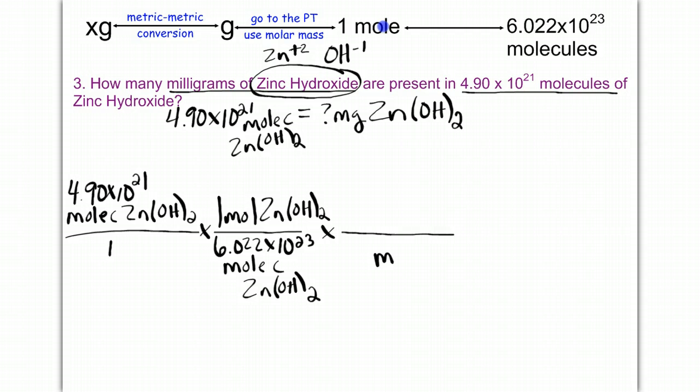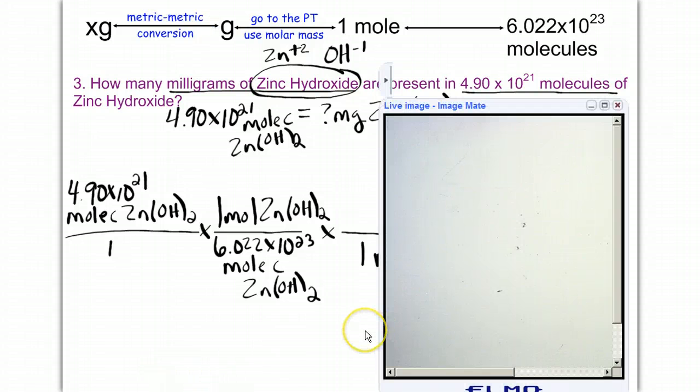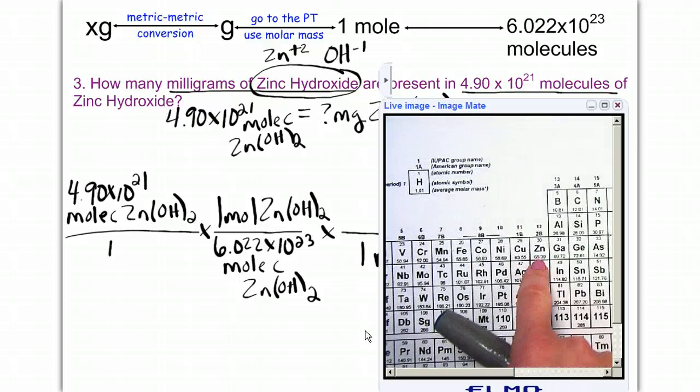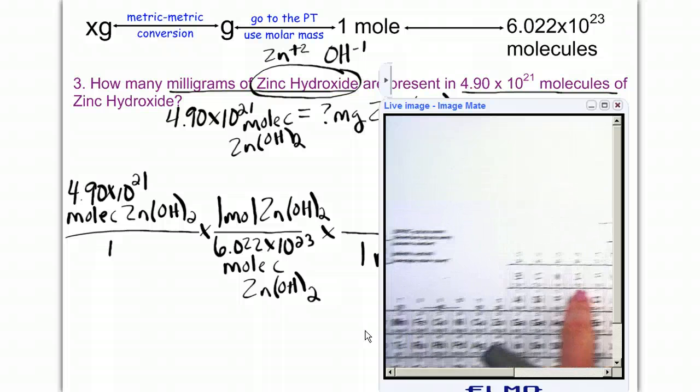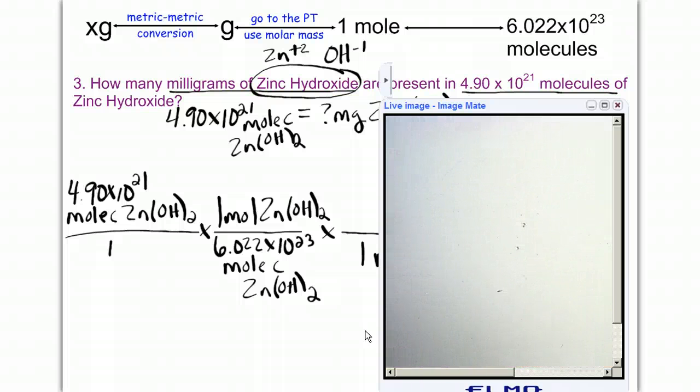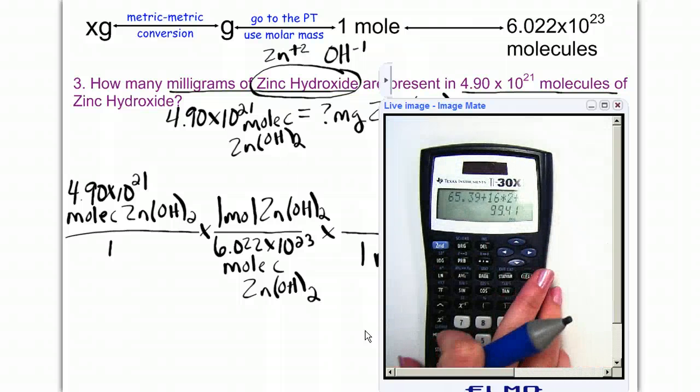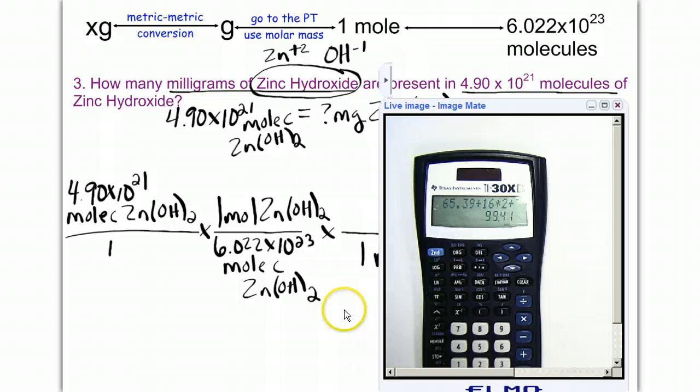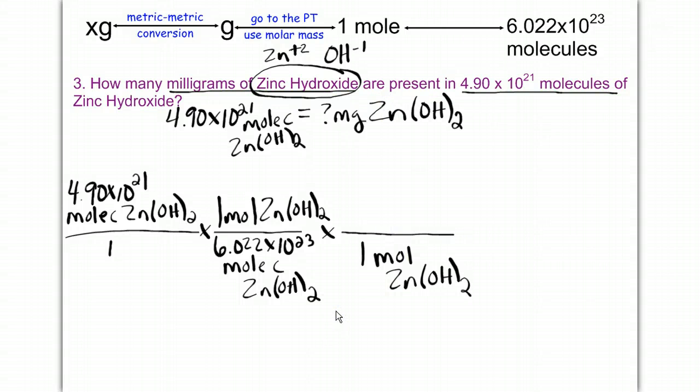Times draw a line. Bring down mole. It's always 1 mole. I'll put my 1 here. And now I'm moving from mole over to grams. And to get grams, I want to go to the periodic table and add up the molar mass. So when I go to the periodic table, I'm going to go find zinc. Here is zinc. And I'm going to add oxygen times 2. I'm going to add hydrogen times 2. And when I get all those added together, I'm going to get a molar mass of 99.41 for zinc hydroxide. So we're going to put at the top 99.41. And that's grams of zinc hydroxide.